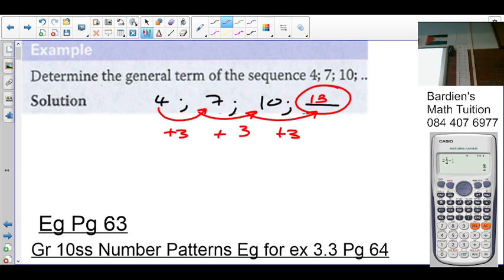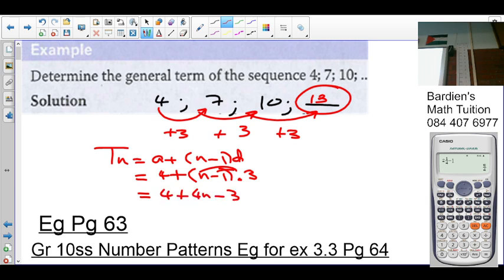What's the general formula for linear sequence? Tn equals a plus (n minus 1)d. What's your a value? 4. So it's 4 plus (n minus 1) times 3. Let's get rid of the bracket. It's 4 plus 3n minus 3. So it's going to be 3n plus 1. That's my general formula.